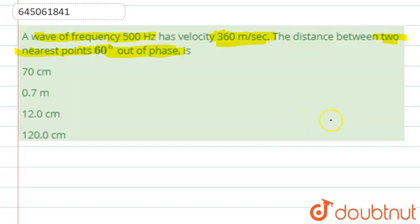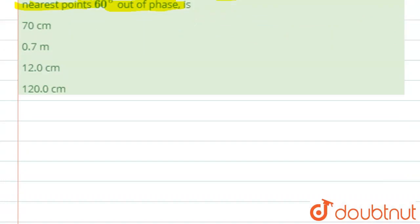So we need to find the distance between two nearest points which have 60 degrees out of phase. Basically, we need to find the wavelength first of all.